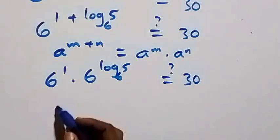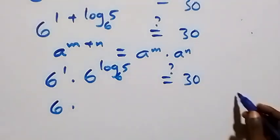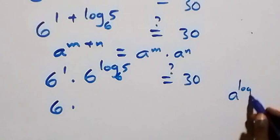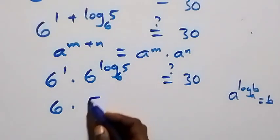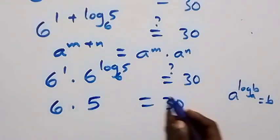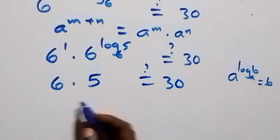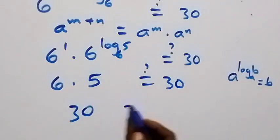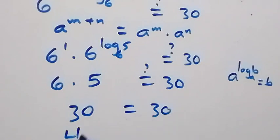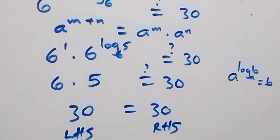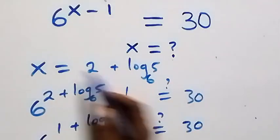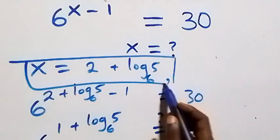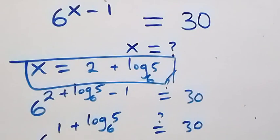Here we follow the rule: when we have a raised to power log b to base a, that equals b. So 6 raised to power log₆5 equals 5. Therefore we have 6 times 5, which equals 30 on this side. And of course 6 times 5 is 30, which equals 30. The left-hand side equals the right-hand side, hence we conclude that x equals 2 plus log₆5 satisfies the given problem.